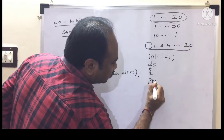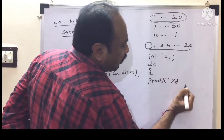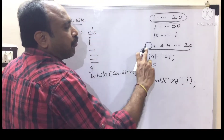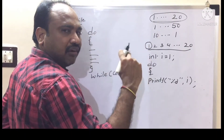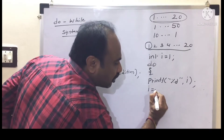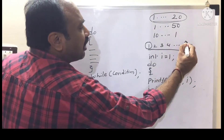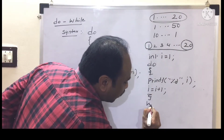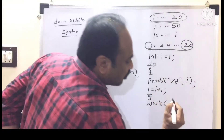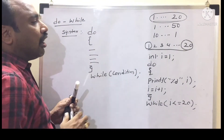Now I have to print the series of values using do-while. Write do, then printf with %d comma i to print the integer value. After printing 1 we have to print 2, after 2 we have to print 3 — the value is increasing, so write i = i + 1, or simply i++. Up to what value do I have to print? 20. So write while(i < 21), or equivalently while(i <= 20).